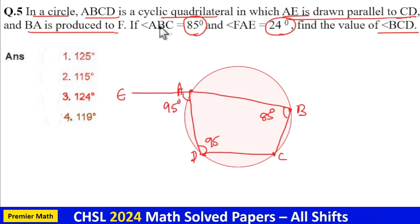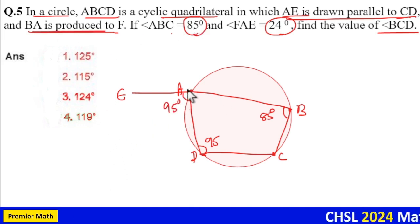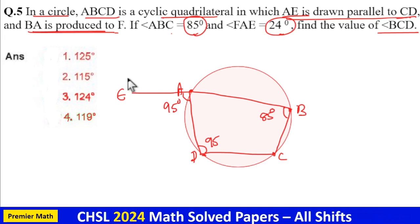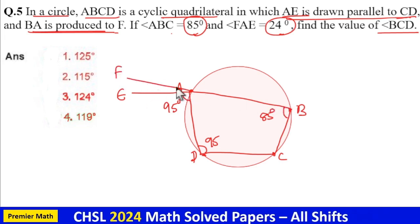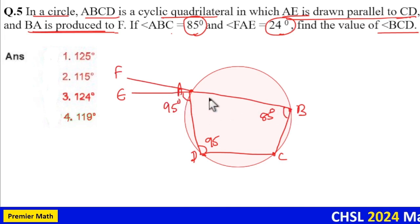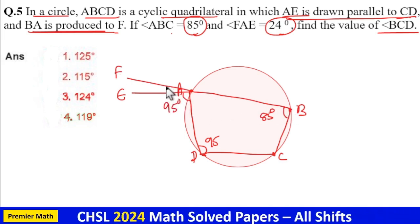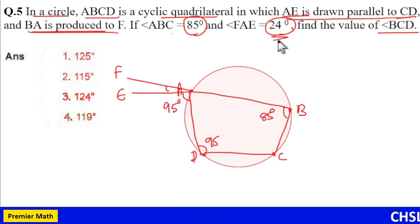Now here BA is produced to F. This is BA, so extend BA to F. Now this is a line which means the total angle is 180 degrees, and here this angle is given as 24 degrees.